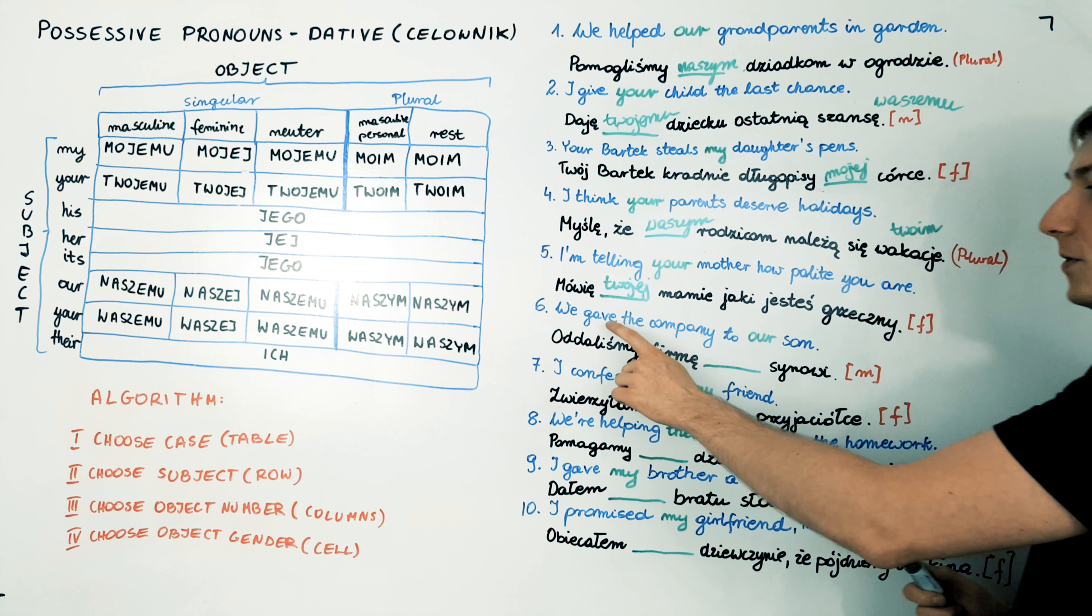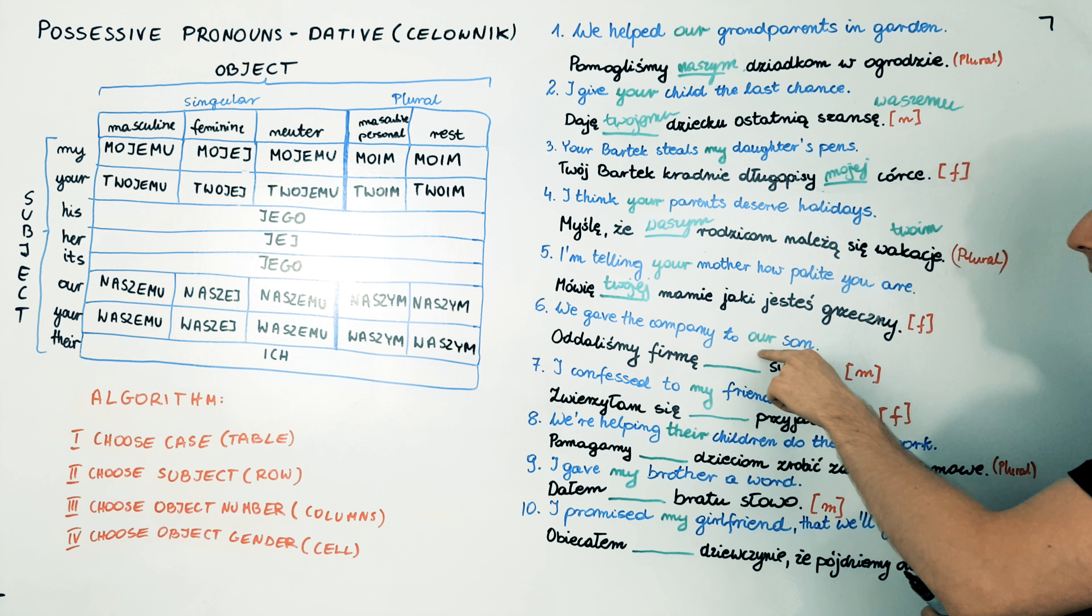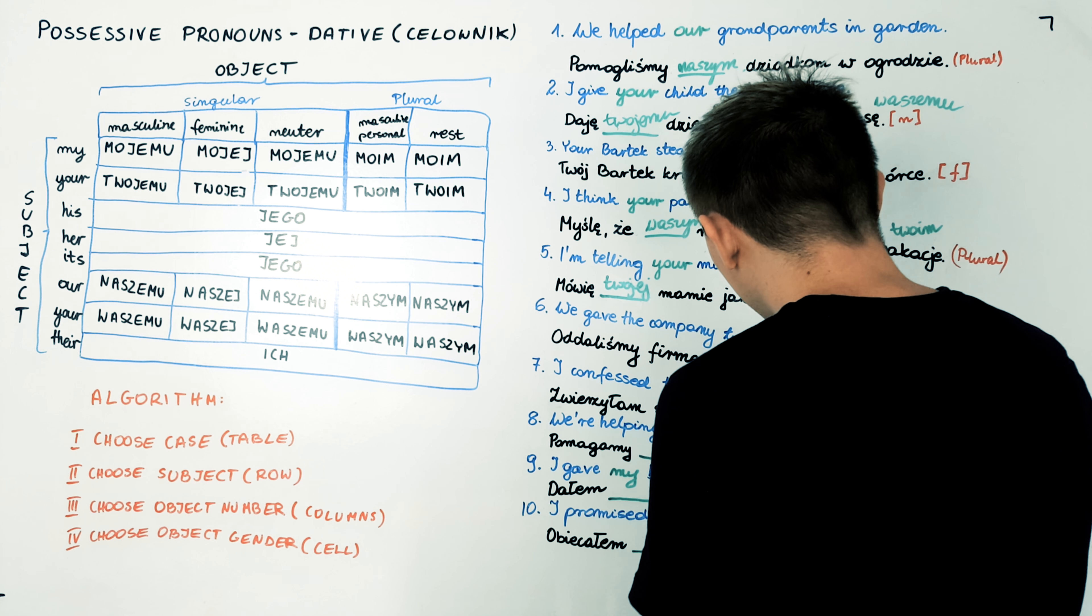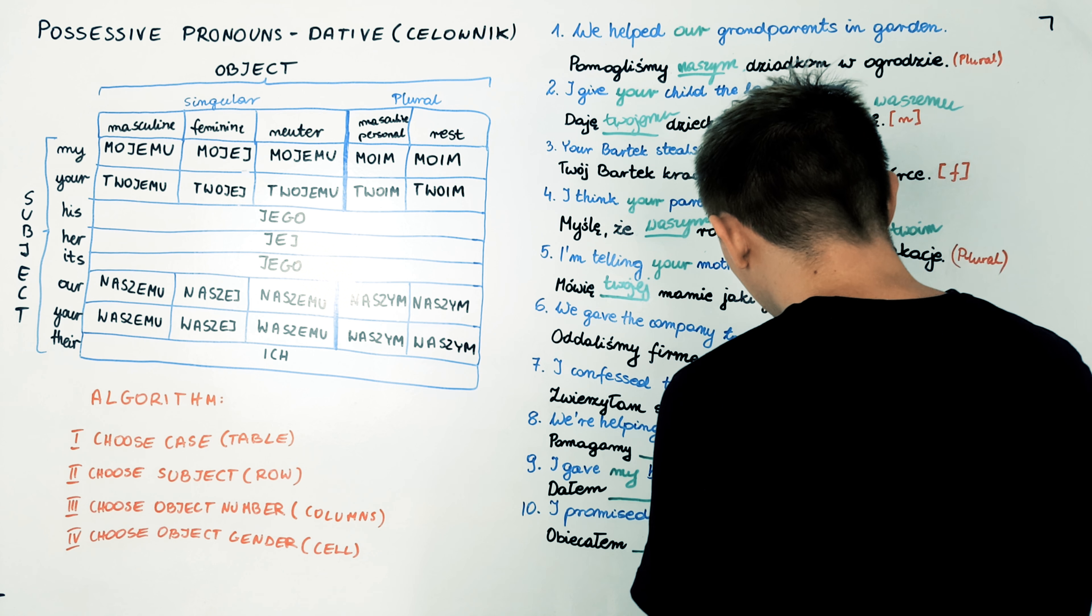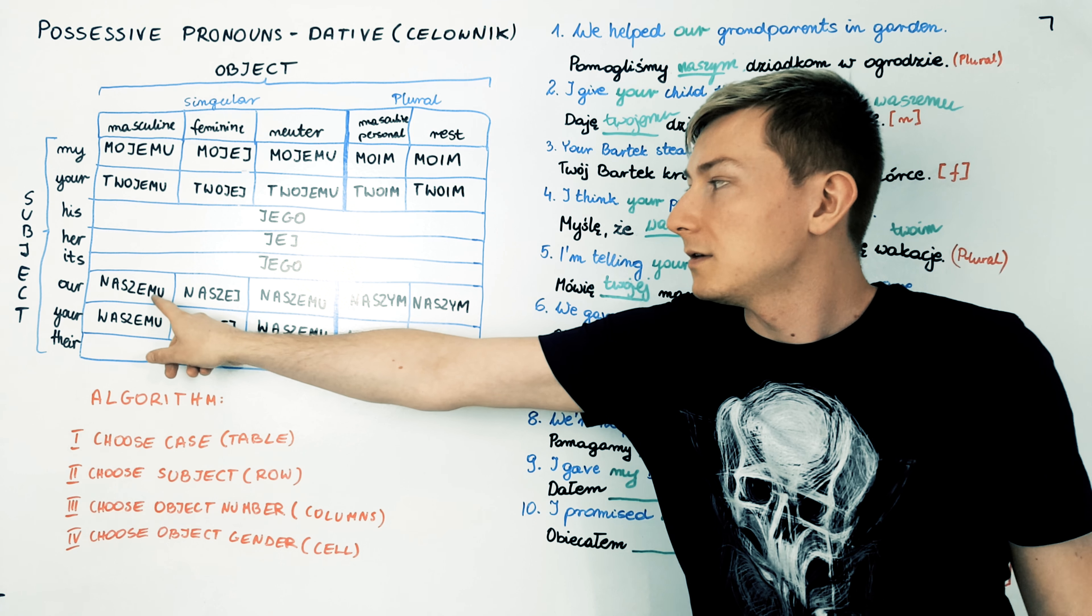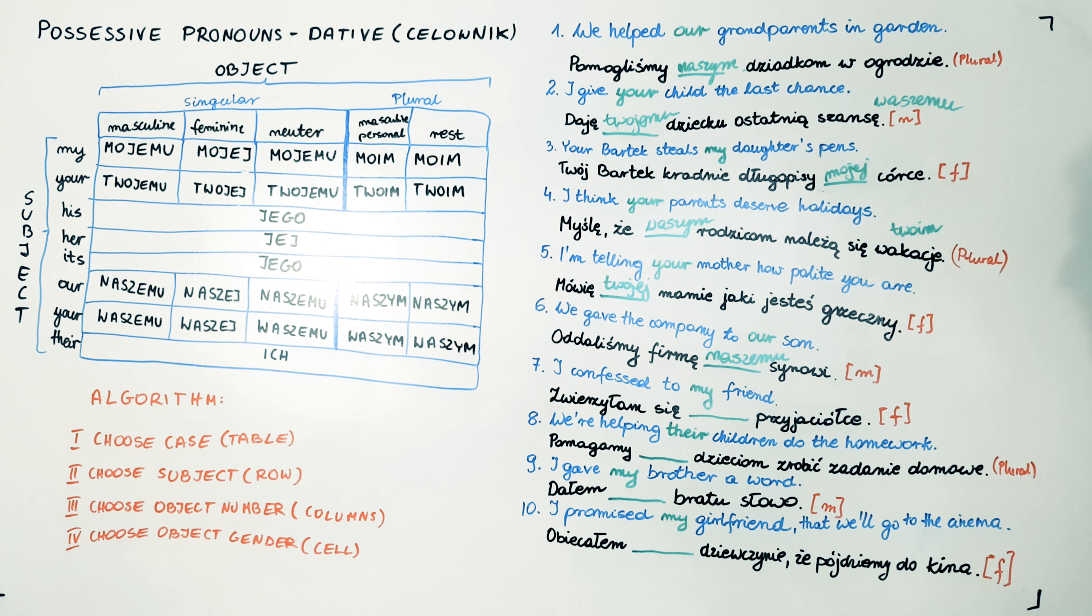Okay. We gave the company to our son. Oddaliśmy firmę naszemu synowi. Naszemu. This one. Okay. Try the sentence number seven.